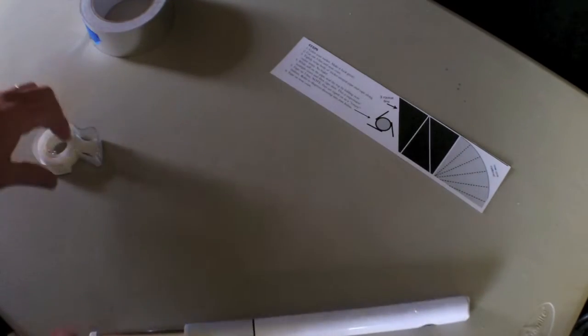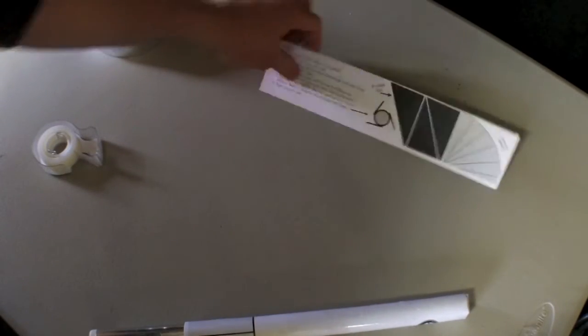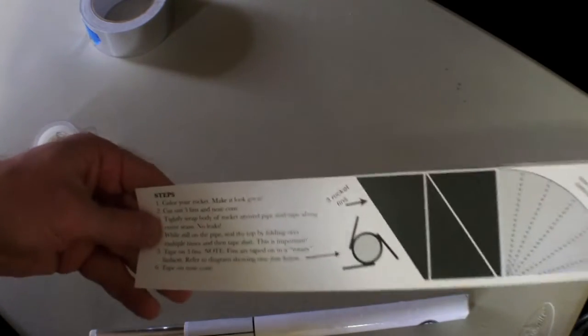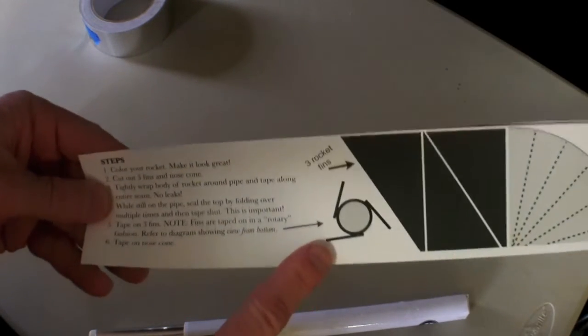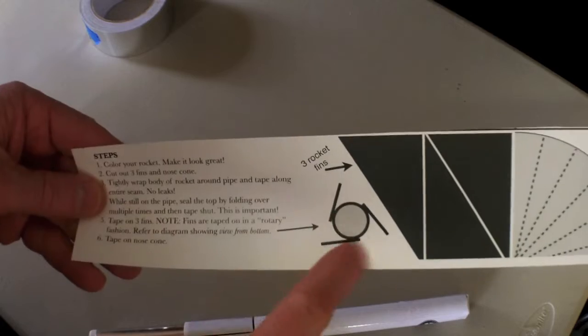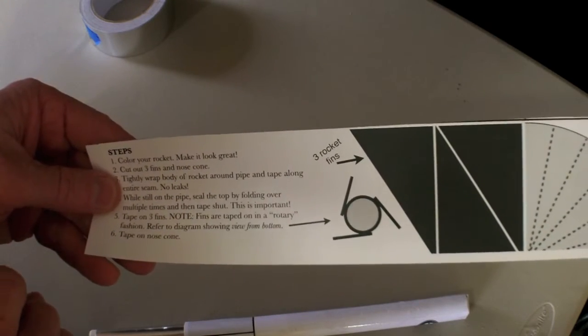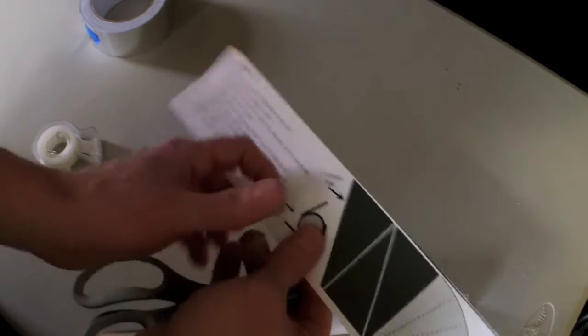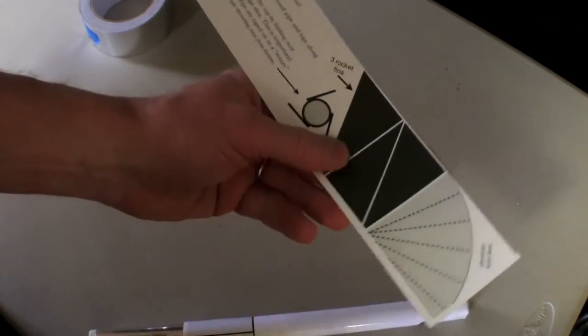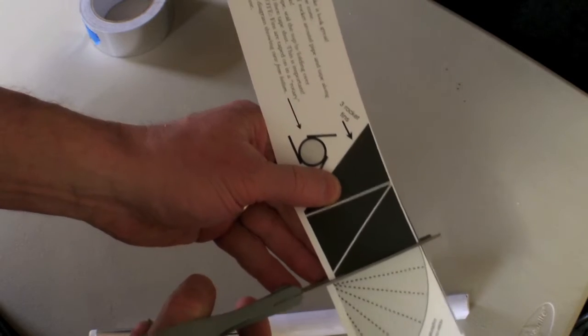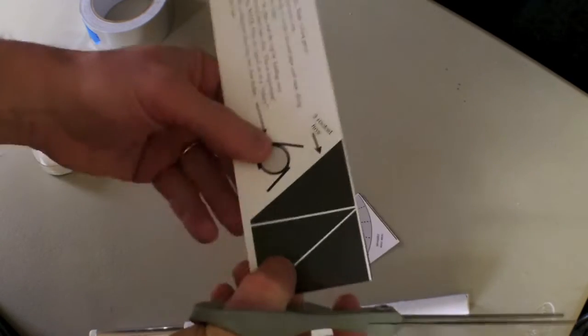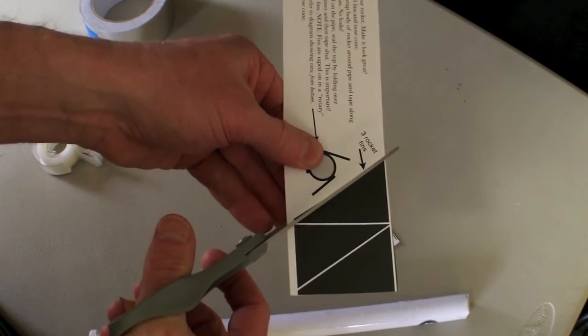Now, we've got to move on to the tail fins and then the nose cone. So here in the directions, you'll see that there's what I call putting the fins on in a rotary fashion versus perpendicular. Let me show you what I mean by that. I'm going to cut out the tail fins.